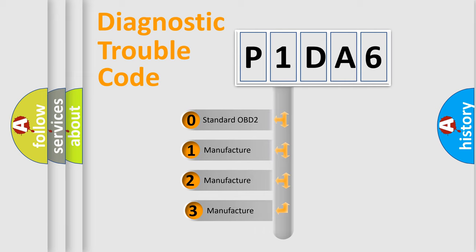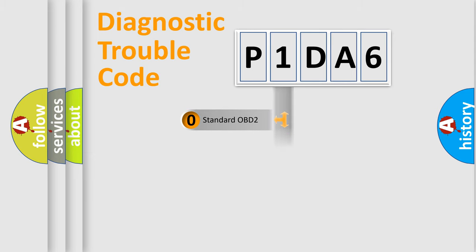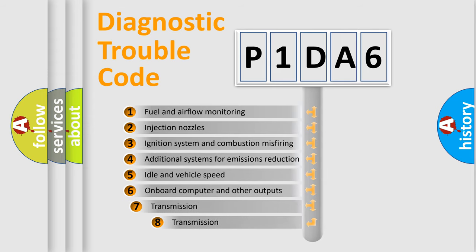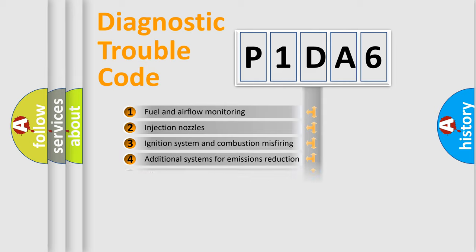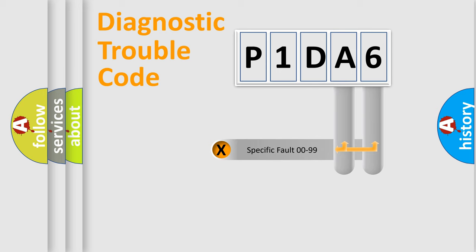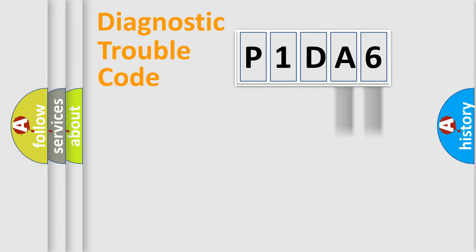If the second character is expressed as zero, it is a standardized error. In the case of numbers 1, 2, or 3, it is a more specific expression of a car-specific error. The third character specifies a subset of errors. The distribution shown is valid only for the standardized DTC code. Only the last two characters define the specific fault of the group.